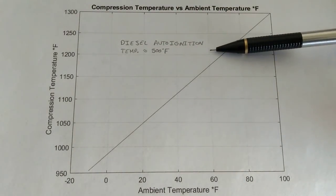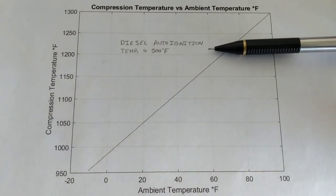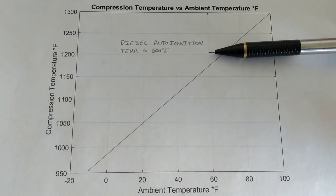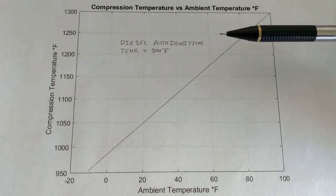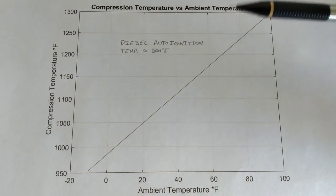So, for starters, the auto-ignition temperature of diesel fuel is about 500 degrees Fahrenheit. What that means is that we have to heat up this diesel fuel and air to 500 degrees Fahrenheit, approximately, at a minimum, in order for it to combust.